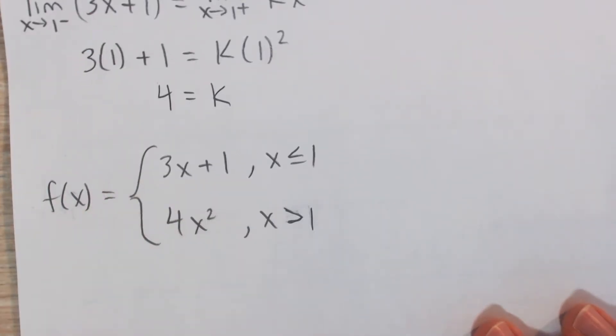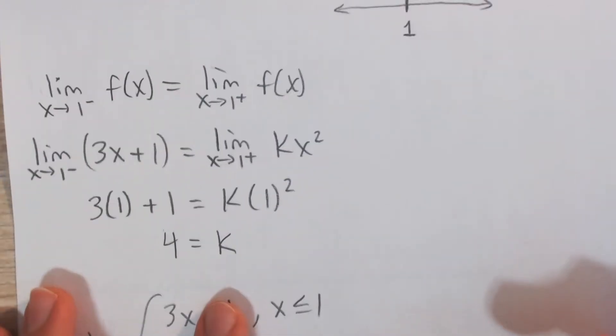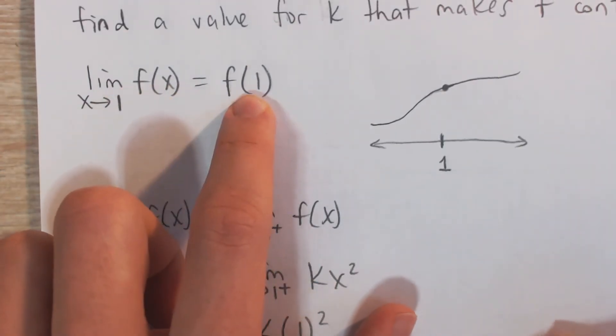So in other words, if our function is 3x plus 1 when x is less than or equal to 1, and 4x squared when x is greater than 1, then those one-sided limits will be equal, and so the limit will exist. But is that equal to f of 1?